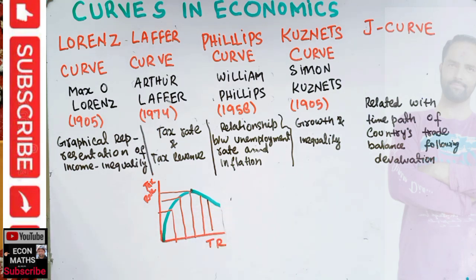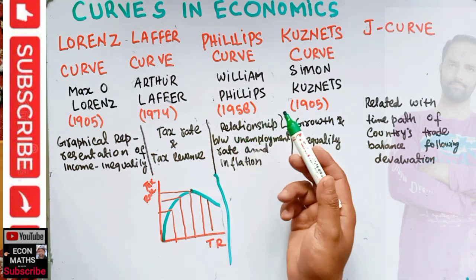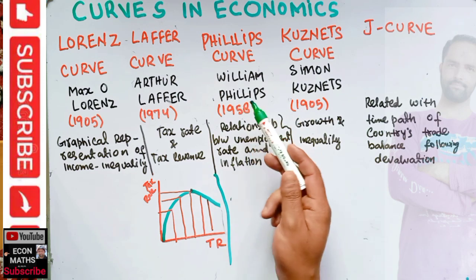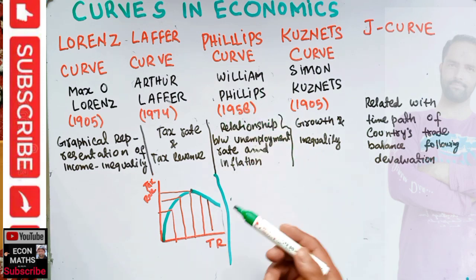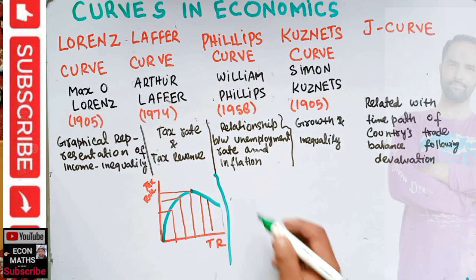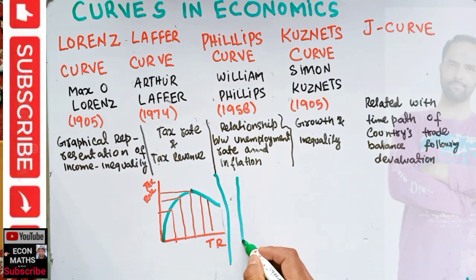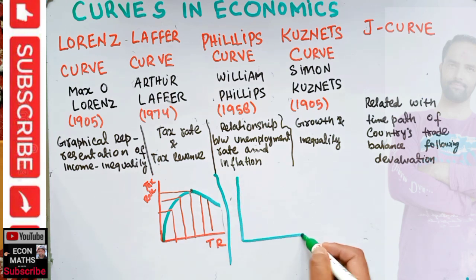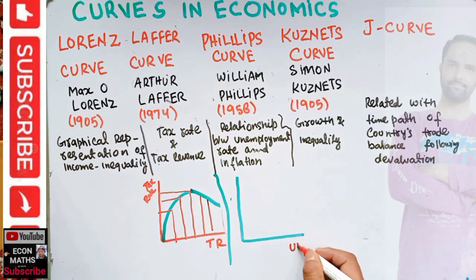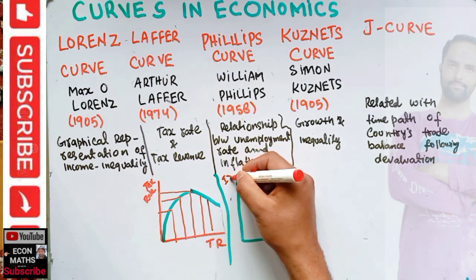Next we have the Phillips curve. It was given by William Phillips in 1958. It shows the relationship between unemployment rate and inflation. We have the unemployment rate on one axis and the inflation rate on the other axis.